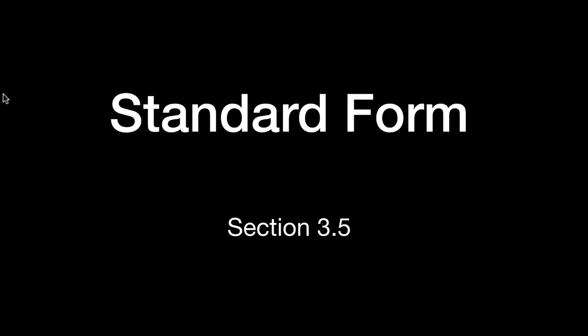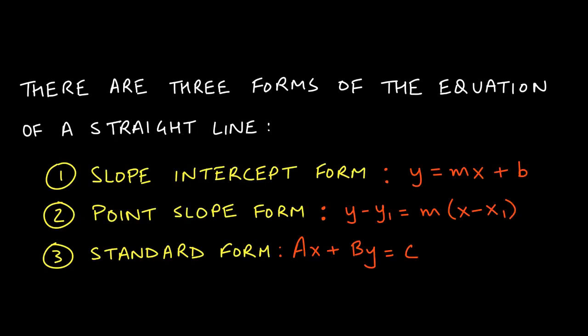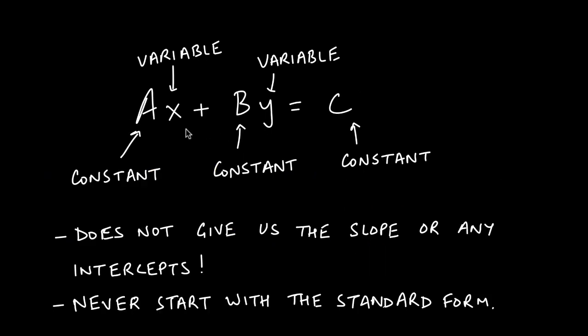Welcome to section 3.5 on the standard form of the equation of a straight line. Just a friendly reminder: there are three forms of the equation of a straight line — slope-intercept form, point-slope form, and now the last one we're responsible for, the standard form. The standard form states that Ax plus By equals C.